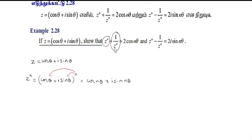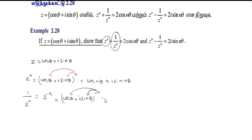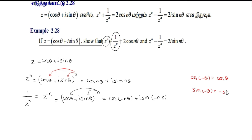Now, 1 divided by z^n is z^(−n). So we have cos θ plus i sin θ to the whole power minus n, which gives cos(−nθ) plus i sin(−nθ). Applying the trigonometric identities — cos(−θ) equals cos θ and sin(−θ) equals minus sin θ — we get 1 divided by z^n equal to cos(nθ) minus i sin(nθ).